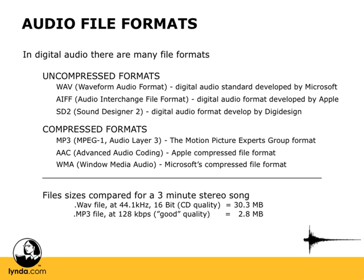Down at the bottom here, I just have a quick comparison for file sizes for a three-minute stereo song. You can see a WAV file with a sample rate of 44.1 and a bit depth of 16-bit, which is CD-quality sound — that song is approximately 30 megabytes. Now, an MP3 version of that same song at 128 kilobits, which is considered good quality, comes in at just under three megabytes. So there's a significant difference in file size between the uncompressed and the compressed formats.